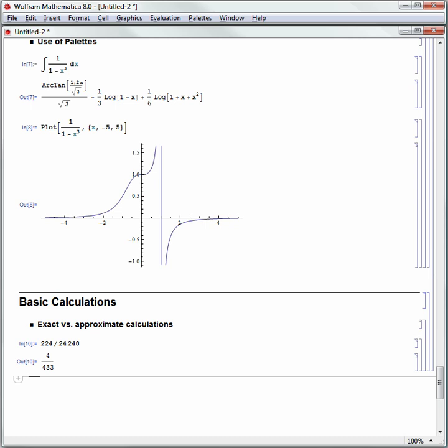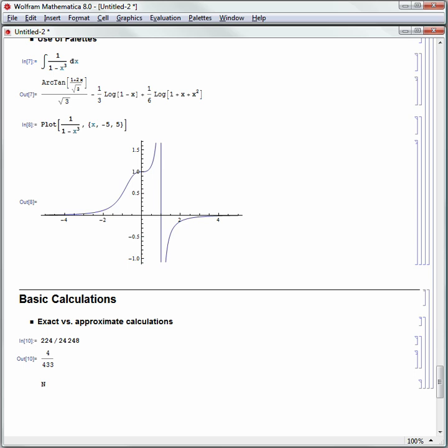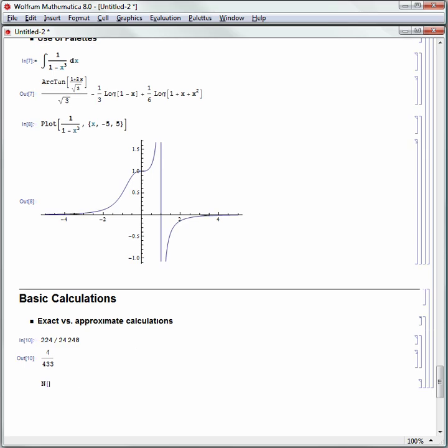Now, perhaps I want to actually numerically approximate that input instead. The capital N means numerically approximate, and I can either copy and paste that input, which is perfectly fine to do. So I'll say capital N, square brackets around what I want to calculate. I want to calculate this input, which I can copy and paste, and I want to approximate it to, let's say, 10 digits, and hit shift enter to calculate. There's that numeric approximation.